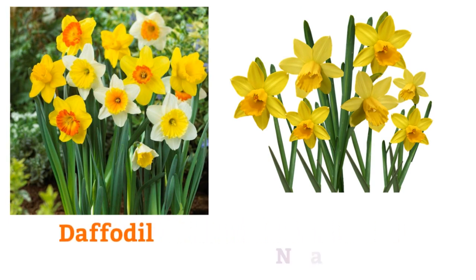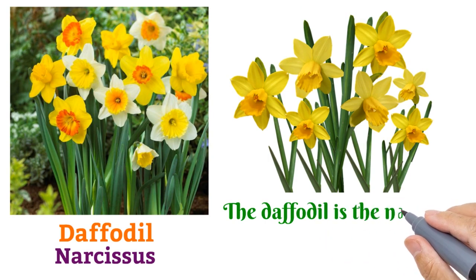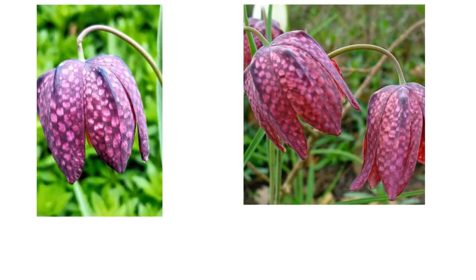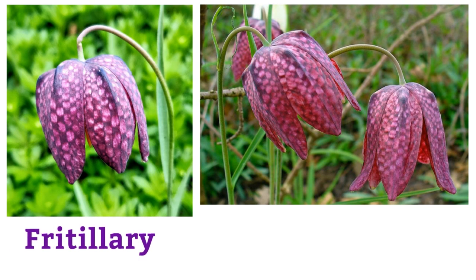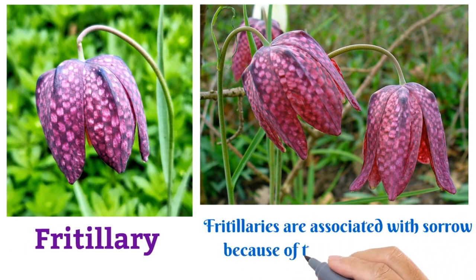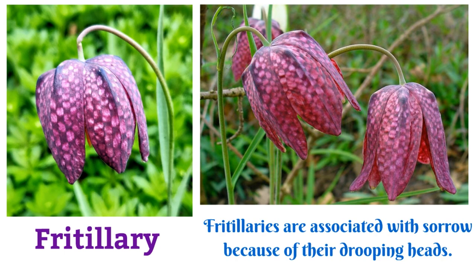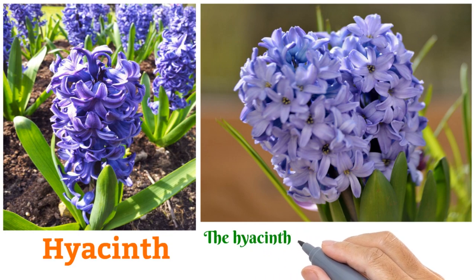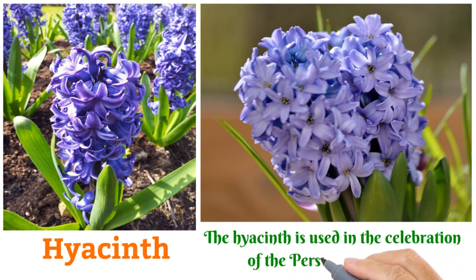Daffodil, or narcissus: the daffodil is the national flower of Wales. Fritillary: fritillaries are associated with sorrow because of their drooping heads.